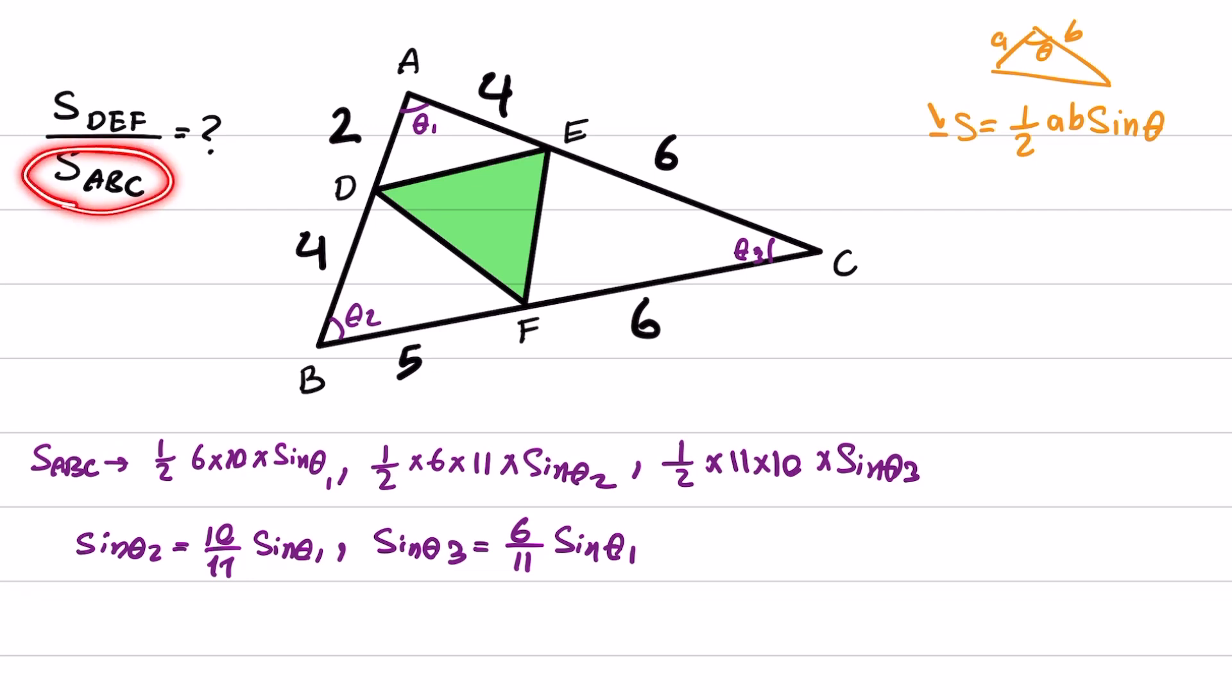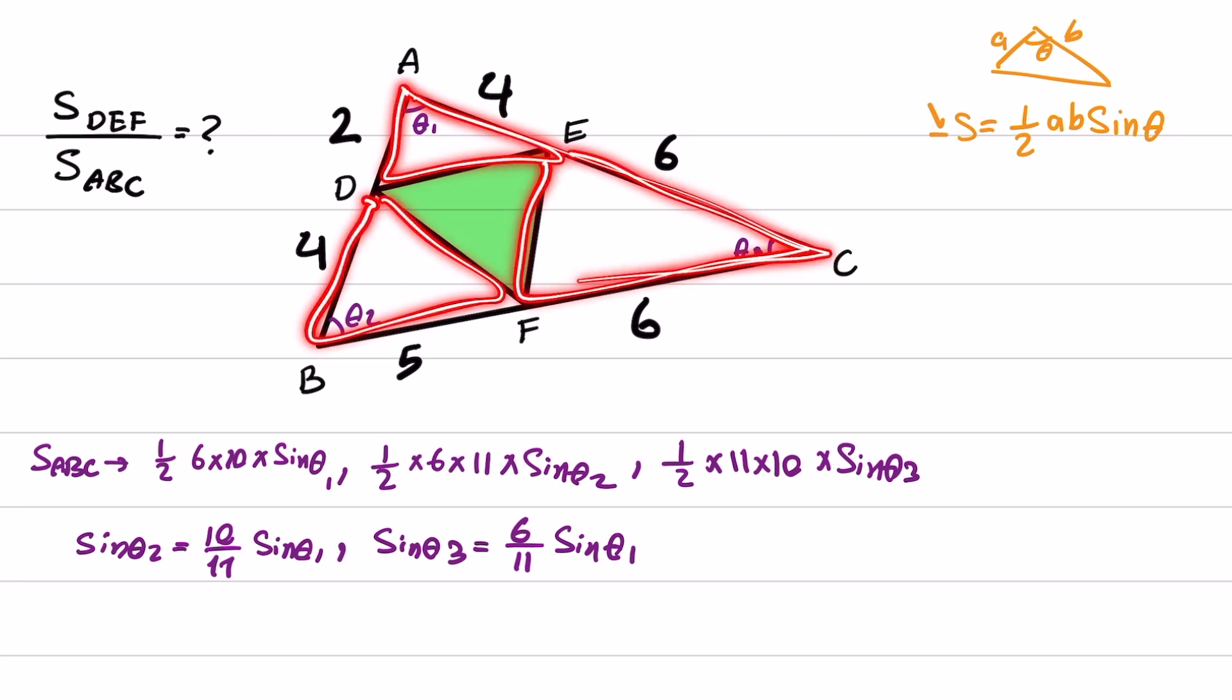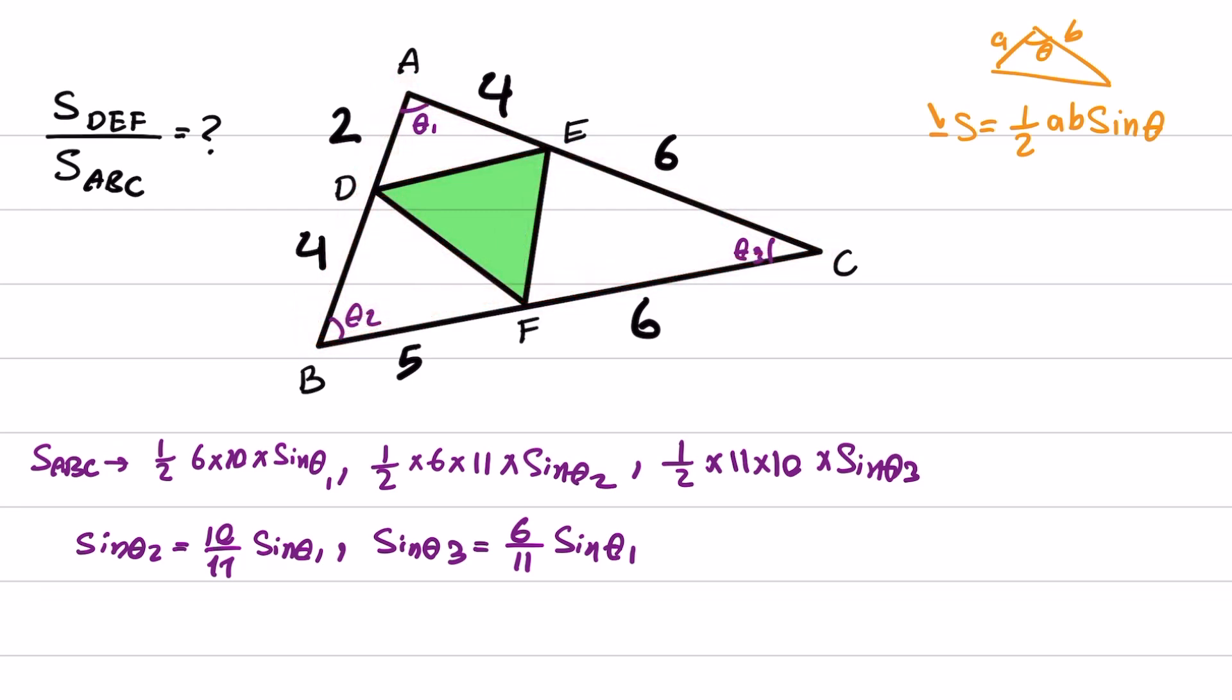Now that we have a rough idea about calculating this area, let's go back to calculating the area of this shaded triangle. So if I subtract the area of these 3 triangles from area of ABC, I can obtain the area of this triangle.